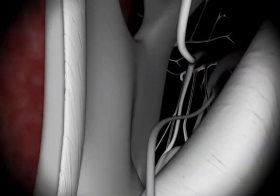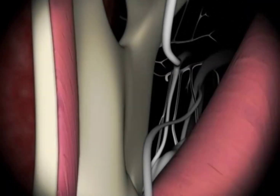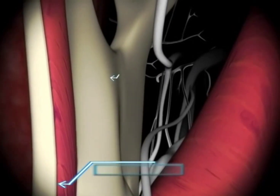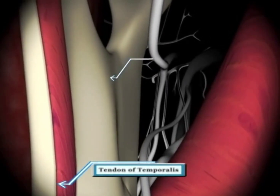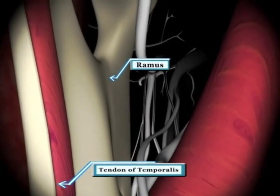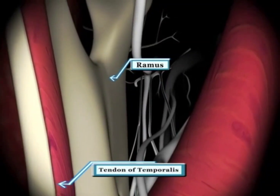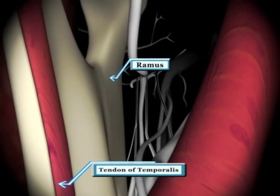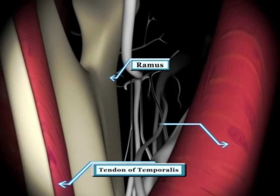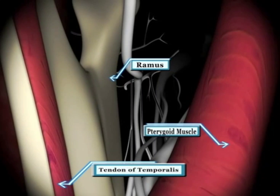A few millimeters later, we see the deep tendon of temporalis attaching to the medial aspect of the mandibular ramus. For the remainder of the tour, we'll be traveling close and parallel to the mandibular ramus. The relatively large medial pterygoid muscle will be just medial to the needle.